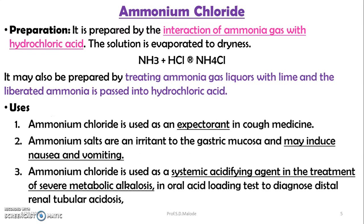Ammonium chloride is prepared by the interaction of ammonia gas with hydrochloric acid. The solution is evaporated to dryness. The reaction is: NH3 + HCl → NH4Cl. It may also be prepared by treating ammonia gas with liquors containing lime, and the liberated ammonia is passed into hydrochloric acid.